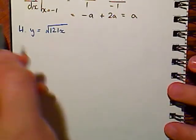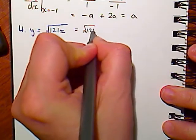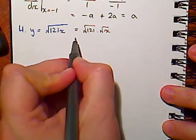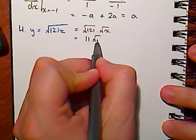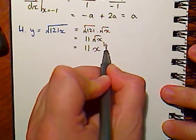Last one for this set of questions. I can rewrite this as the square root of 121 times the square root of x. This is 11 square root of x, which is 11x to the half.